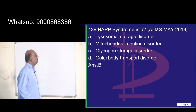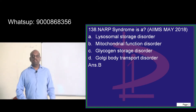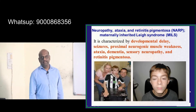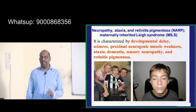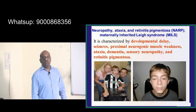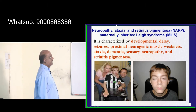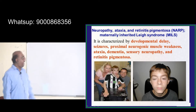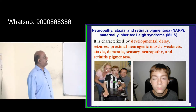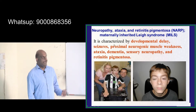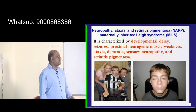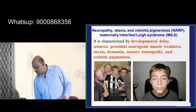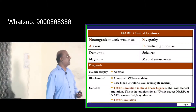NARP syndrome is a mitochondrial disorder — neuropathy, ataxia, retinitis pigmentosa — and it is a maternally inherited condition. There are seizures and sensory neuropathy that characterize the NARP syndrome, which is what you need to remember.